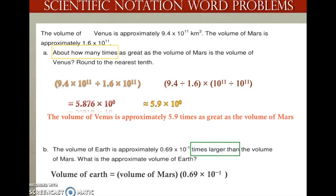One of my numbers is not written in proper scientific notation. Before we can do any operation, you must put your numbers in proper scientific notation. I'm moving from a small number to a big number, so I have to subtract a power, leaving me with 10 to the negative 2 power. Now let's break it apart: 1.6 times 6.9 for my coefficients, and 10 to the 11th times 10 to the negative 2 for my powers. That leaves me with 11.04 times 10 to the 9th power.